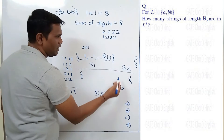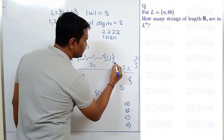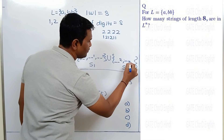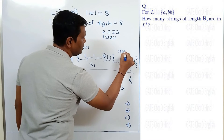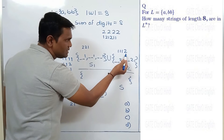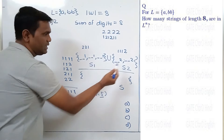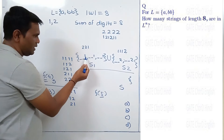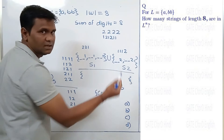Set S2 contains all numbers whose last digit is 2, for example 1, 1, 1, 1, 2. Here the sum of digits is 5 but the last digit is 2, so it belongs to S2. These two sets are disjoint — every number in S1 has last digit 1, and every number in S2 has last digit 2.